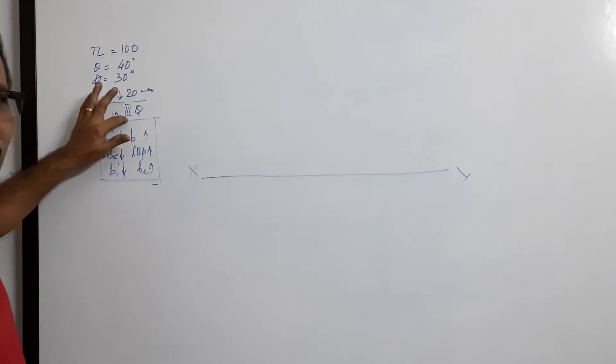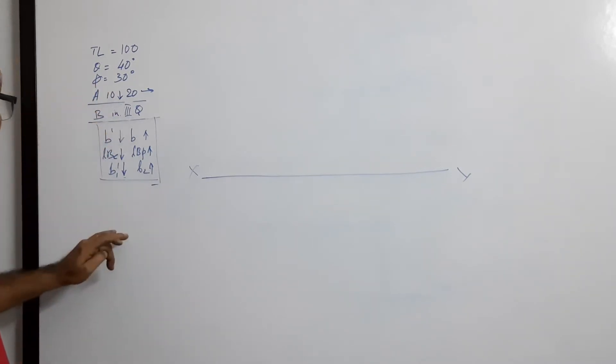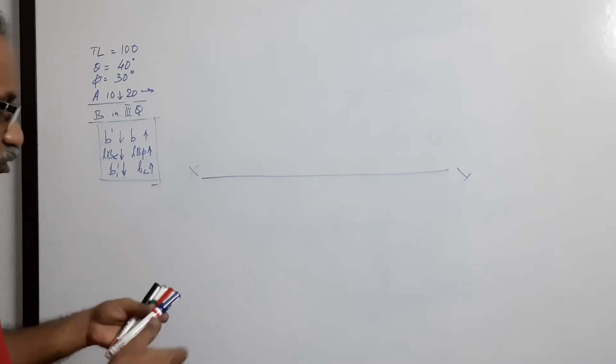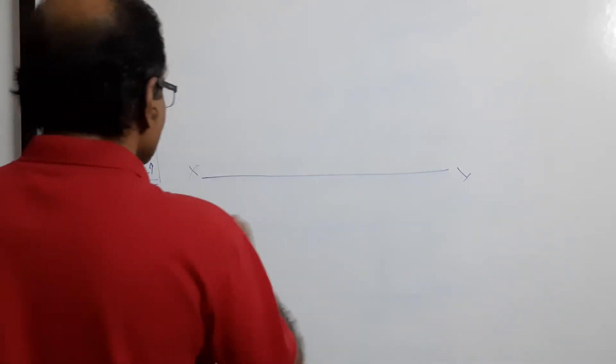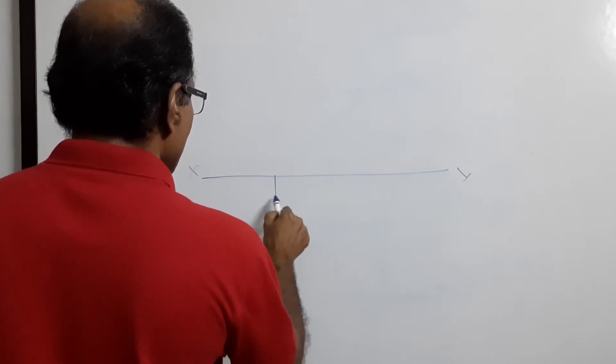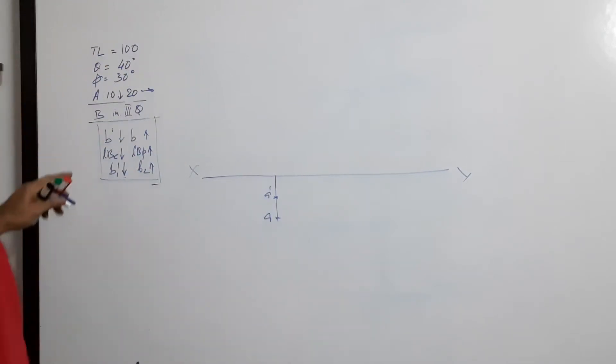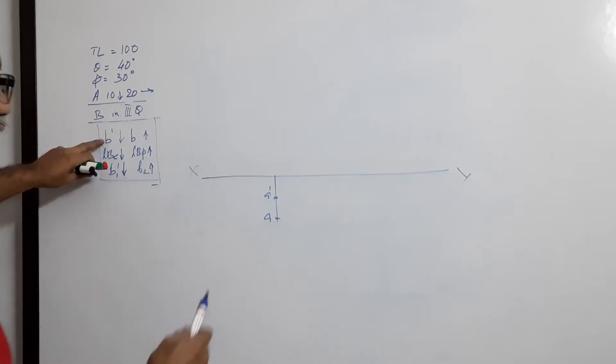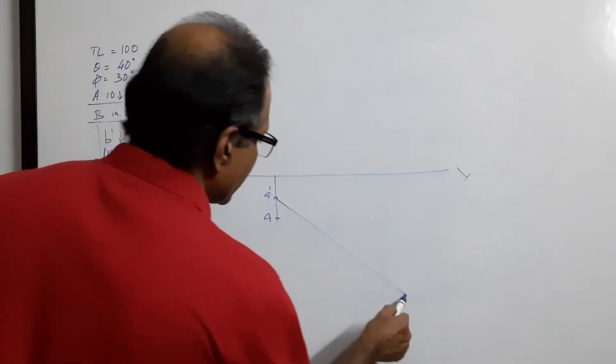B third quarter, elevation third. A, A dash. Elevation A dash is 40 degrees, draw down.